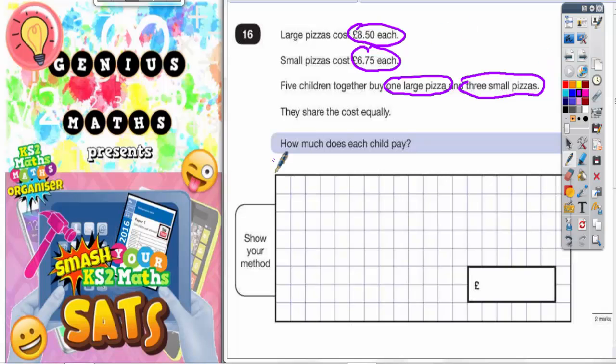This is a multi-step question which means we've got more than one part to work out. The first thing to do is figure out what the total cost of this large pizza and three small pizzas is going to be. If we've got one large pizza we want one lot of £8.50 and three small pizzas we want three lots of £6.75. Let's work that out first.